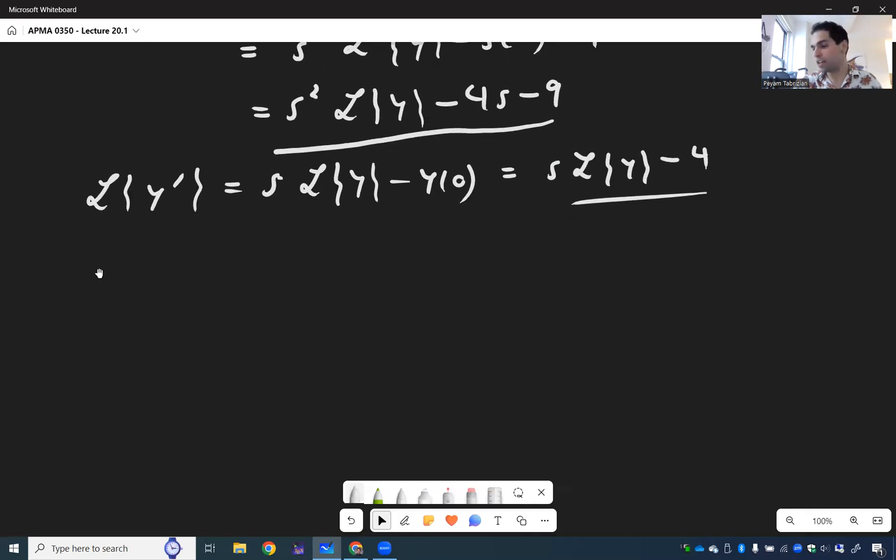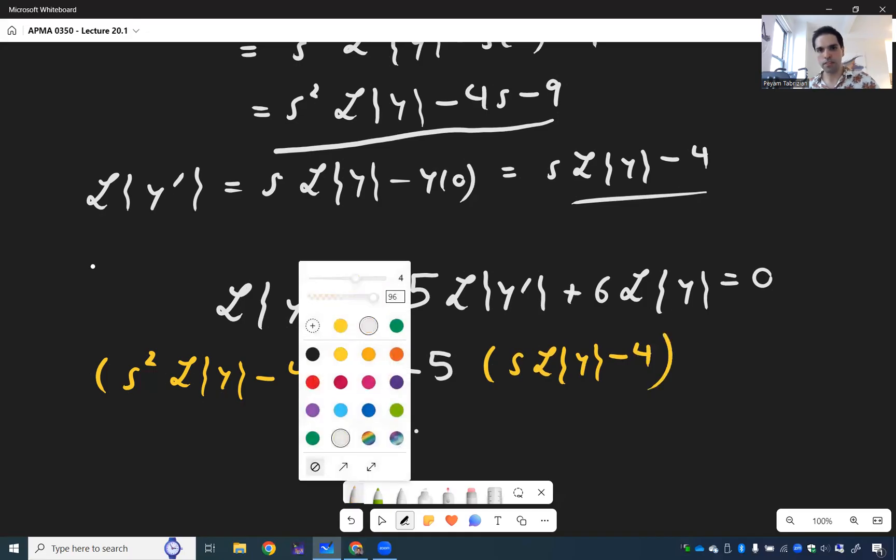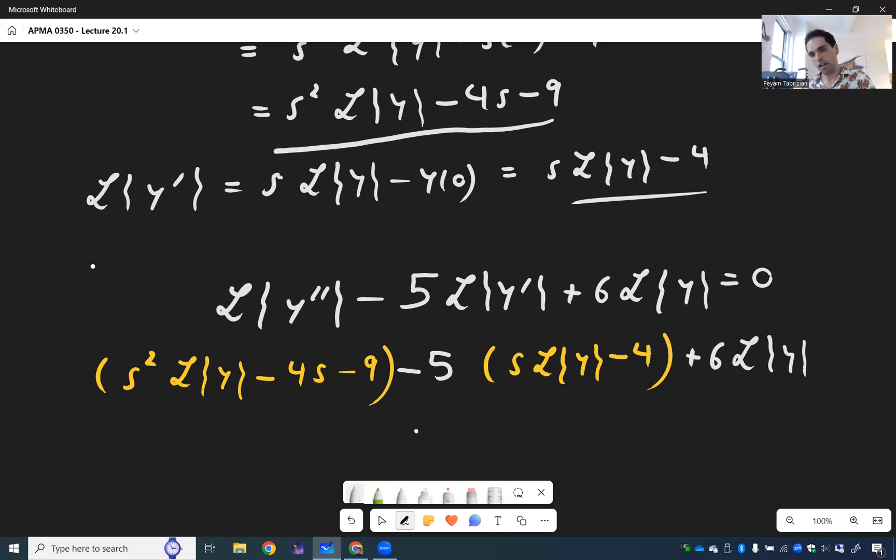And now, let's go back to our differential equation. So we have L of y double prime minus 5L of y prime plus 6L of y equals 0. And now we can use our formulas that we found. So L of y double prime was S squared L of y minus 4S minus 9. And then minus 5L of y prime is S L of y minus 4. And then just plus 6L of y equals 0.